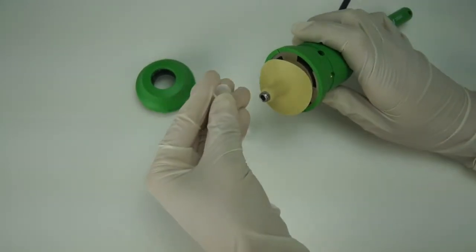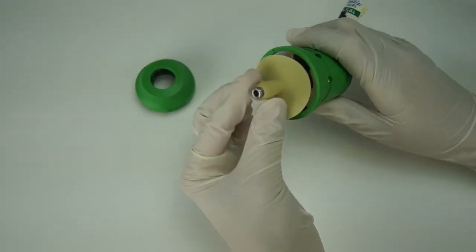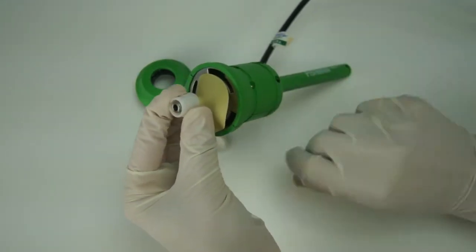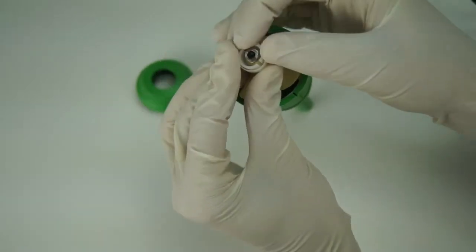Next, attach the piston stabilizer to the lead screw one half at a time, securing in place with the locking ring.